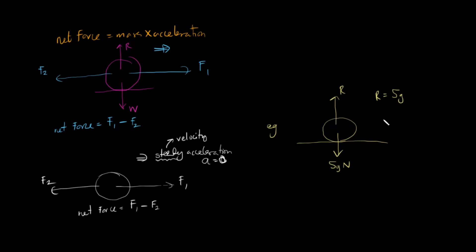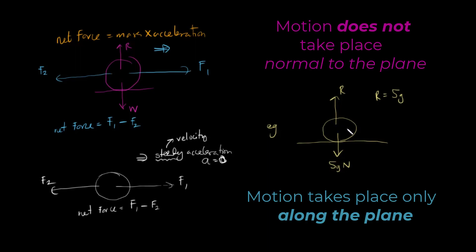The main motion is working along this plane, so there would be motion over here. There is a forward force which is unknown, and this is a rough surface, so there is friction.